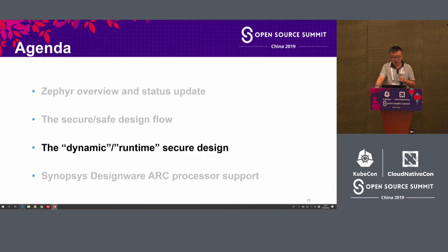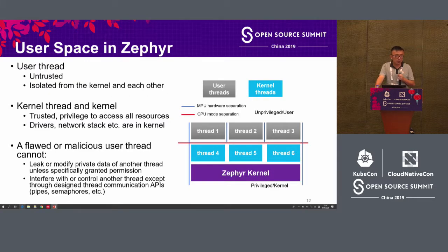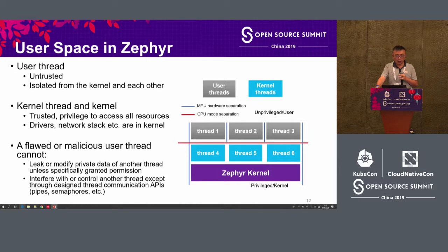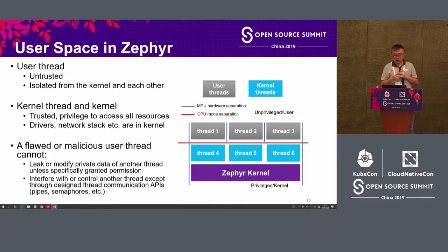Next, let me share about dynamic security — what kind of secure design operates under dynamic, runtime scenarios. Zephyr supports user space, which is very interesting. In real-time operating systems, not many support user space; Zephyr is probably one of a few open-source RTOSes that does. In the market, many did not support user space, but Zephyr does. The user thread is untrusted and limited in terms of access authorities — there are things it cannot access. Kernel threads, on the other hand, have full access and can do anything.